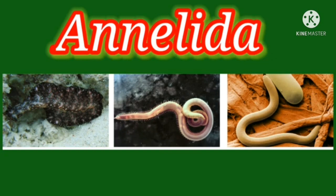The body is covered by a thin cuticle. Their locomotory organs are setae and parapodia. Just as our locomotory organs are legs, their locomotory organs are setae and parapodia. Sexes may be separate or united — separate is the zoological term dioecious, meaning both sex organs are on different individuals; hermaphrodites means both sex organs are present in the same animal.